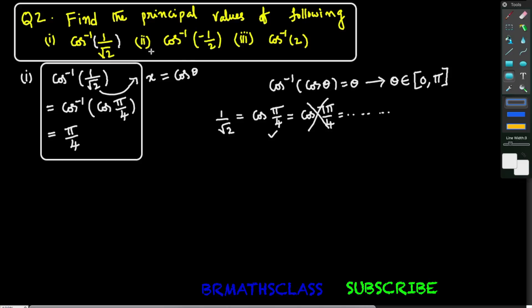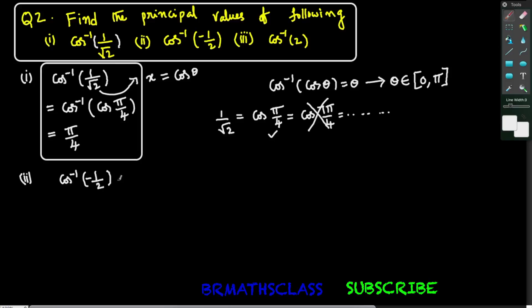Now let's see the second bit: the principal value of cos inverse of minus 1 by 2. This second bit is of the form cos inverse of minus x. From the inverse trigonometric functions chapter, we know that cos inverse of minus x equals pi minus cos inverse x. So I'll use the cos inverse of minus x formula.